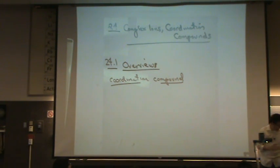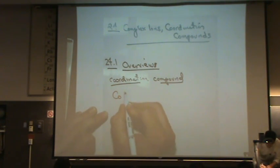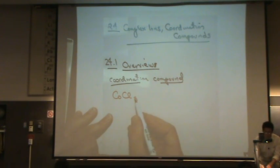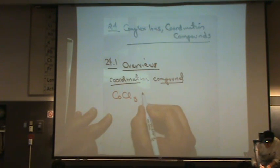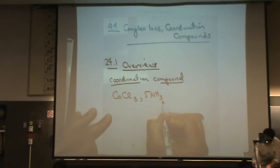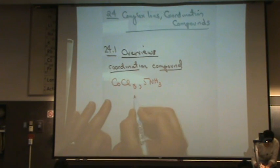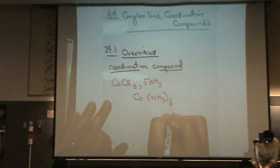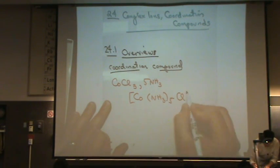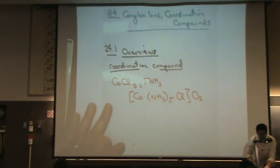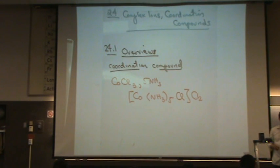Let me give you an example. When you have cobalt(III) chloride with 5 ammonias, you form a coordination compound that looks like this: [Co(NH3)5Cl]Cl2. We're going to learn how to name these things, but this is a coordination compound — it's basically a compound that has a transition metal.